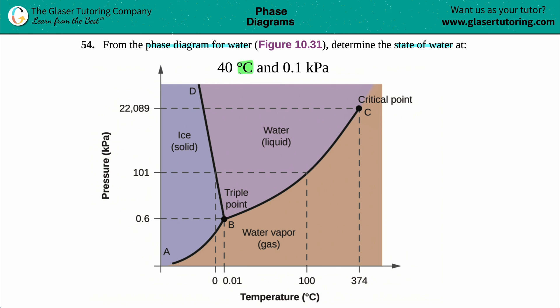The degrees Celsius matches up with the x-value coordinates, so 40 would be the x-value. The kilopascals matches up with the pressure on the y-side, so 0.1 is the y-coordinate. Basically, we're just trying to find the point (40, 0.1).